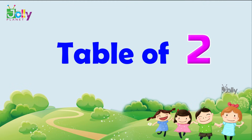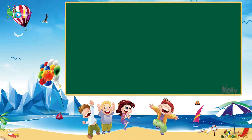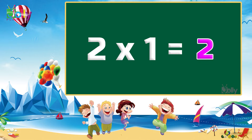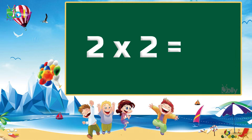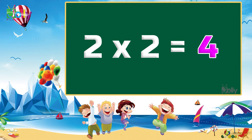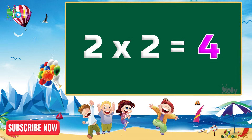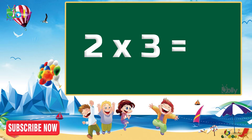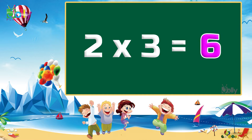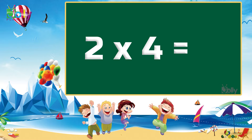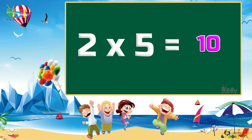Table of two. Two one's are two. Two two's are four. Two three's are six. Two four's are eight. Two five's are ten.